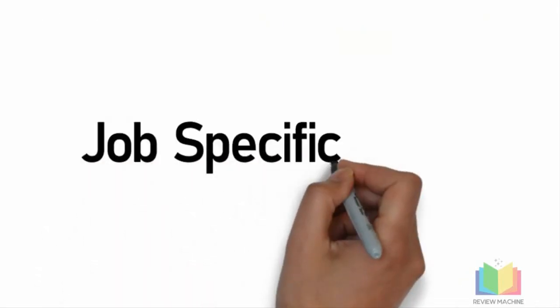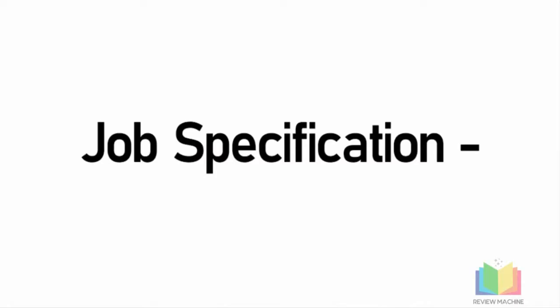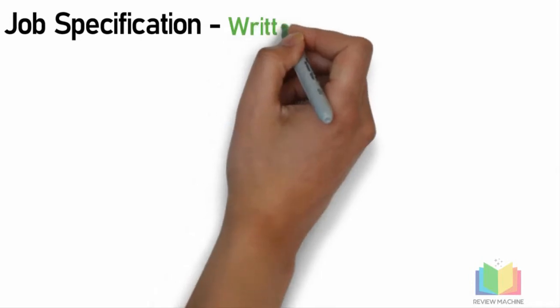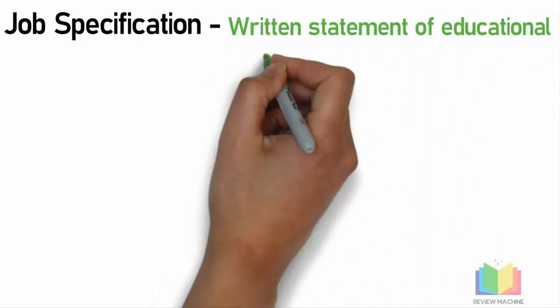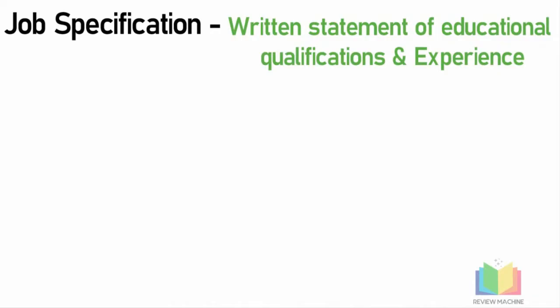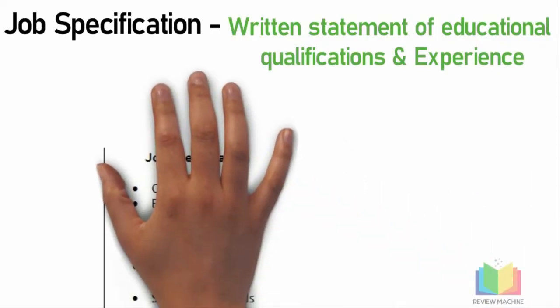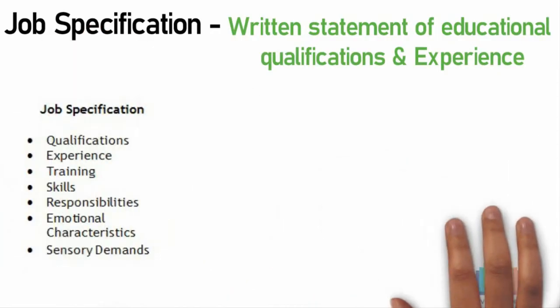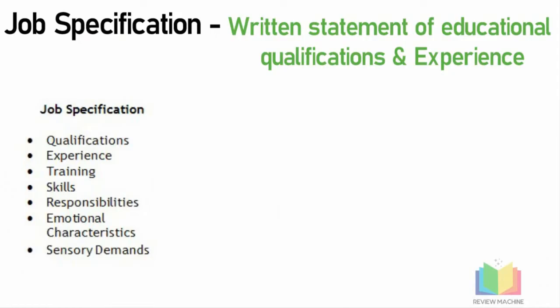Job specification is also known as employee specification. It is a written statement of educational qualifications, specific qualities, level of experience, and emotional and technical communication skills required to perform a particular job. It also includes general health, mental health, intelligence and aptitude involved in performing a specific job.